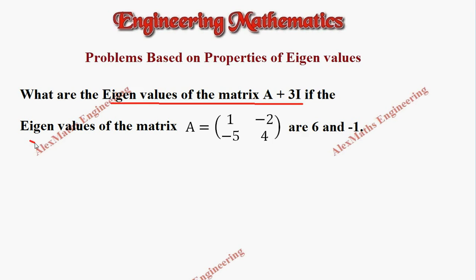eigenvalues of the matrix A are 6 and -1? Suppose the eigenvalues of the matrix A are λ₁ and λ₂. We are taking two values because it's a 2×2 matrix.